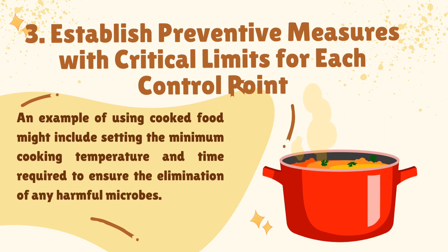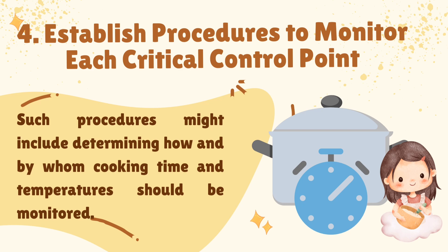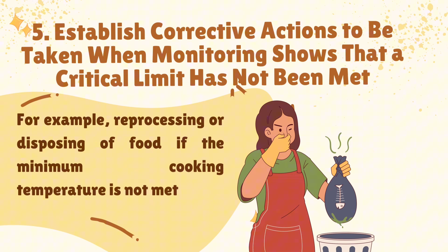Third, establish preventive measures with critical limits for each control point. For example, when cooking food, set the minimum cooking temperature and time required to ensure the elimination of any harmful microbes. Fourth, establish procedures to monitor each critical control point, such as determining how and by whom cooking time and temperature should be monitored. Fifth, establish corrective actions to be taken when monitoring shows that a critical limit has not been met — for example, reprocessing or disposing of food if the minimum cooking temperature is not met.